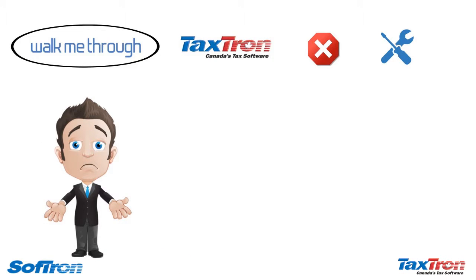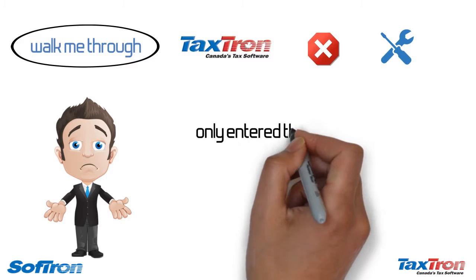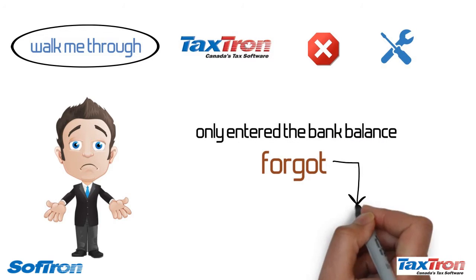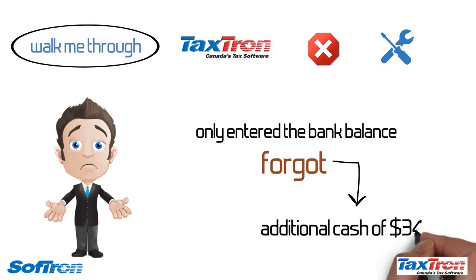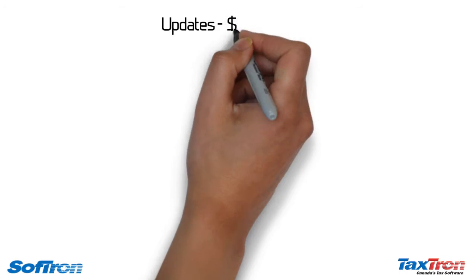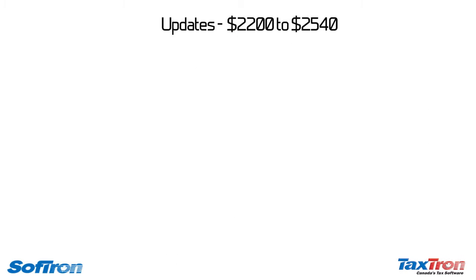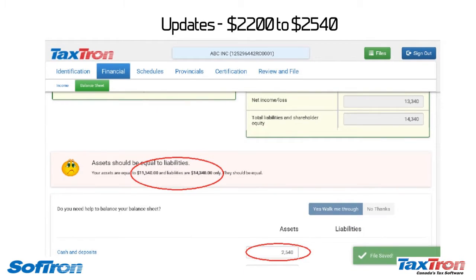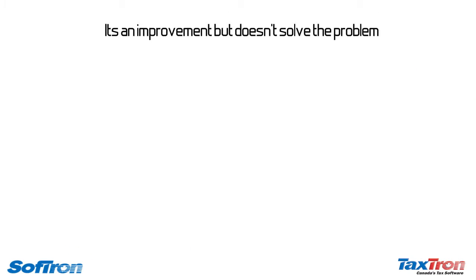Charles reviews his cash and deposits again and realizes that he had only entered the bank balance but he forgot an additional cash of $340 that a client paid on the last day of the financial year. So he updates his cash and deposits from $2,200 to $2,540 and the balance sheet now looks like this. Hmm, it's an improvement but it doesn't solve the problem.